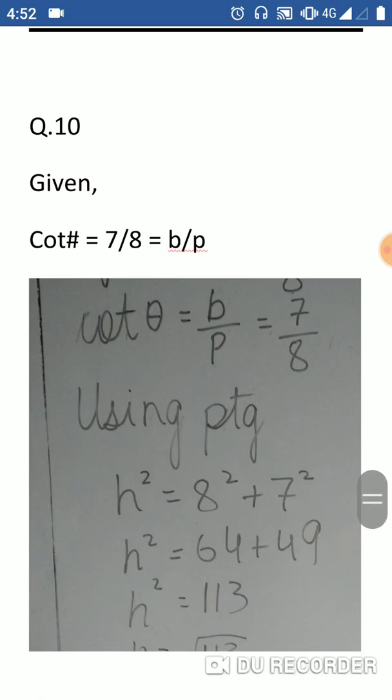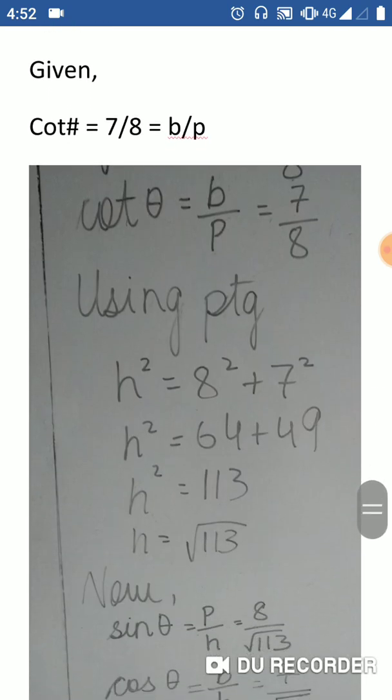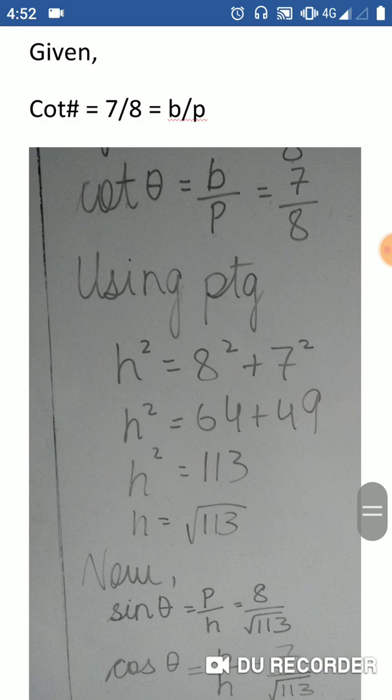Question number 10: cot theta equals 7 by 8. Evaluate 1 plus sin theta into 1 minus sin theta, divided by 1 plus cos theta into 1 minus cos theta.